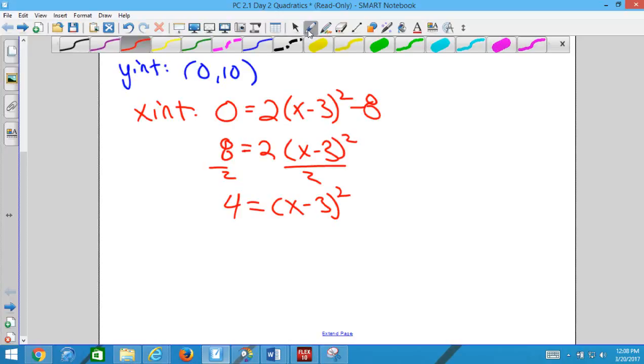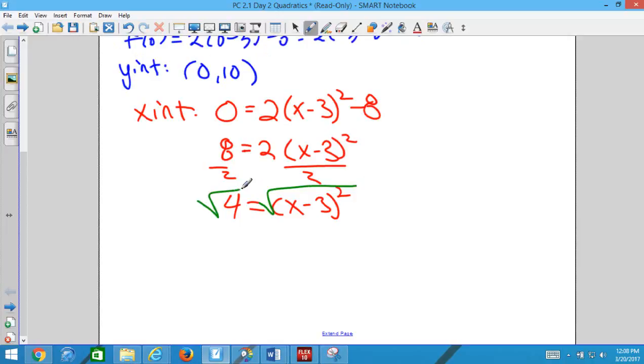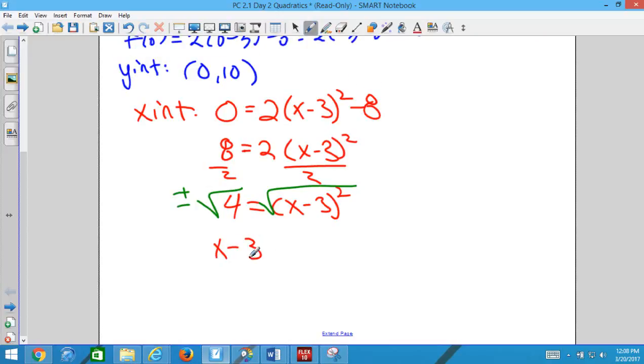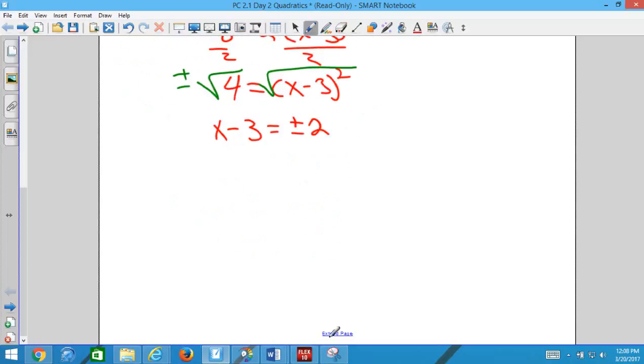But if you do a square root, there's something else you've got to do. Right. Good job. So we're going to do plus or minus on that 4. I'm going to switch sides only because I like the x on this side. You don't really have to. So now we square root both sides and we get x minus 3 is equal to plus minus 2. So we will have 2 x-intercepts. And then we're going to add the 3 to both sides.